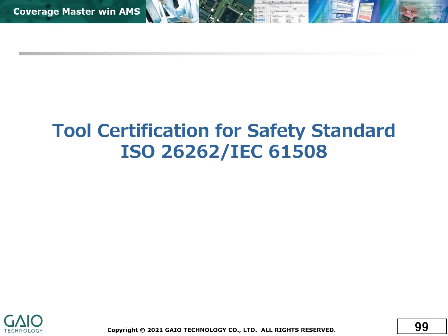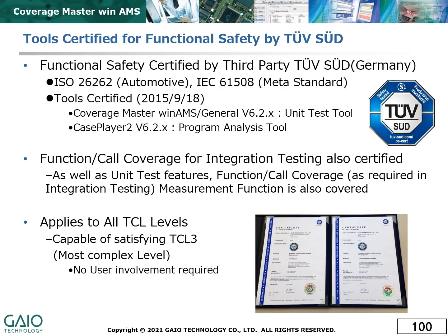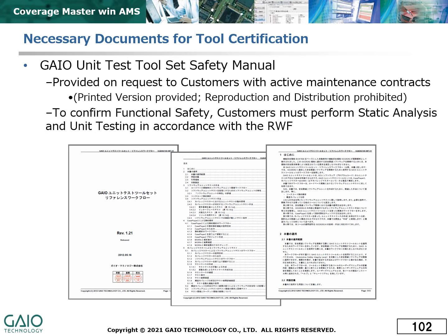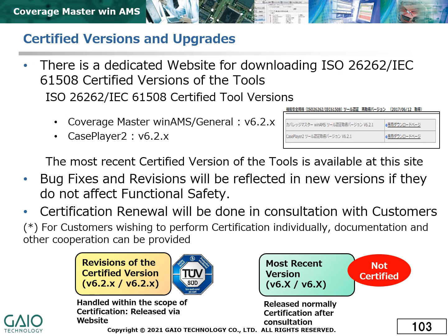CoverageMaster WinAMS is fully certified for the functional safety standards ISO 26262 and IEC 61508. This certification was performed by an independent certification body and covers both the CoverageMaster WinAMS and Case Player 2 tools for all TCL levels. We have also prepared a safety manual, which describes how the tools should be used to test in accordance with the standard requirements. If this manual is followed properly, it becomes unnecessary to individually qualify the tools for the project being qualified. The safety manual is a controlled document, and each copy is issued to a specific customer. Compliance with the processes described in this document ensures compliance with the functional safety requirements of ISO 26262. Specific versions of the tools are certified, and these can be downloaded from a dedicated website that always provides the most recent certified versions.